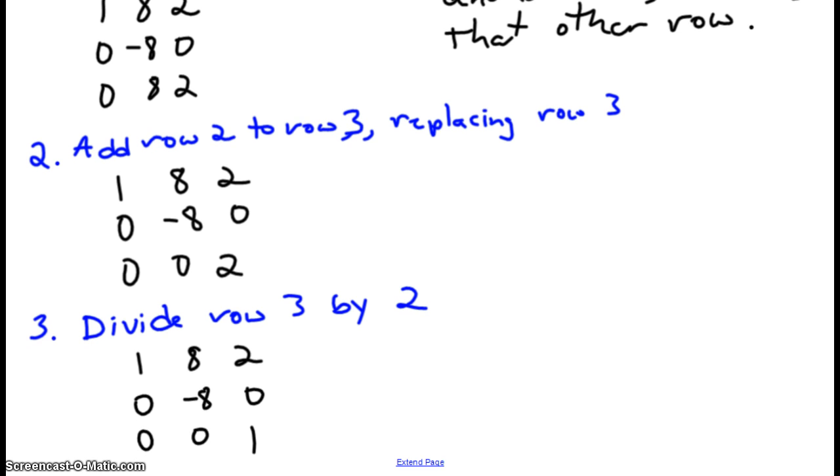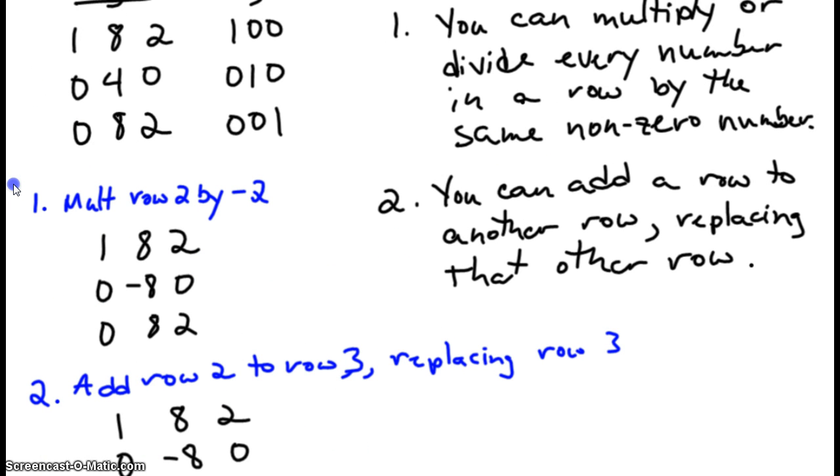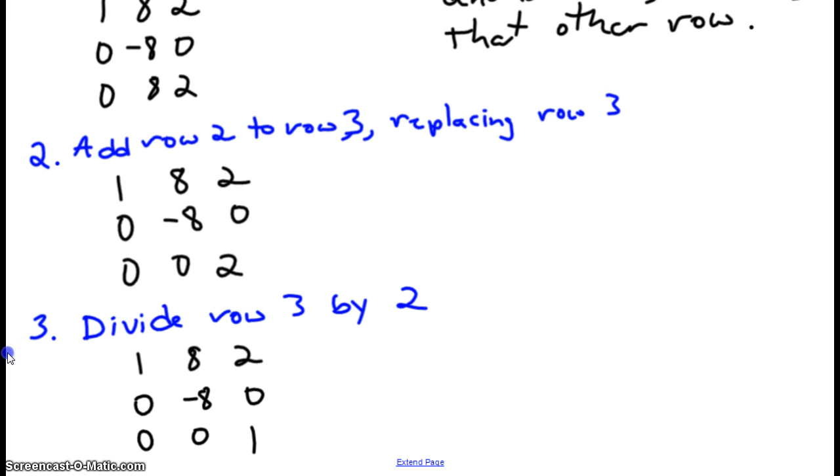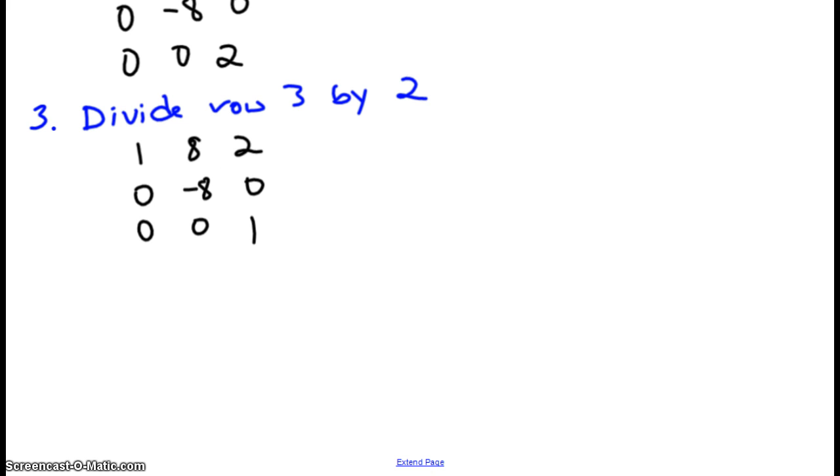And that's going to give us 1 8 2, 0 negative 8 0, and 0 0 1. And very cool, our row three, if you remember our target here was row three is supposed to have be 0 0 1, and indeed that's what our row three looks like. So we're getting somewhere. The next thing we could divide row two by a negative eight and get row two to our goal, but while it's a negative eight, let's go ahead and use it for the row above, and let's add row 2 to row 1, replacing row 1.